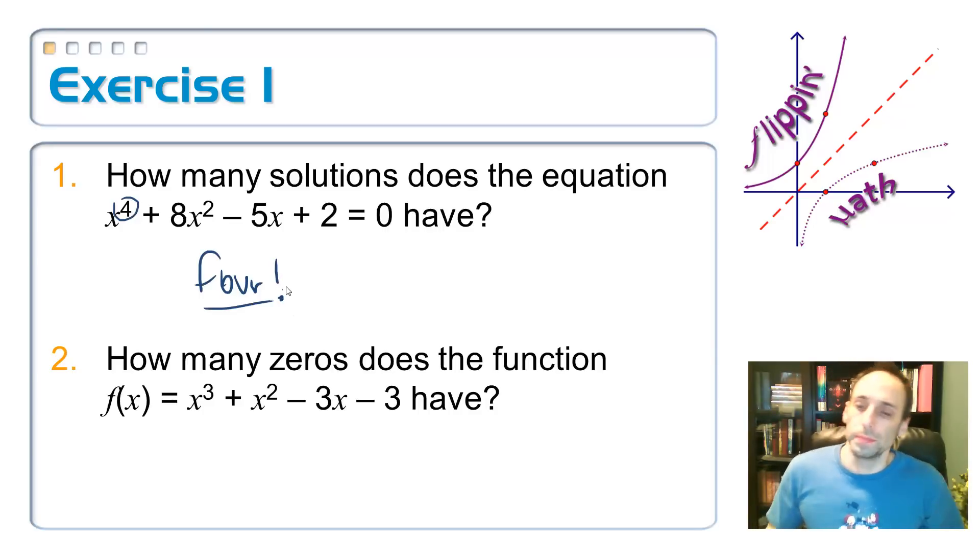How many solutions to the equation? And I can see that I have a quartic equation. It has a degree of four. So from experience we know, or we should know, that there should be four solutions here. How many zeros does this function have? So f of x equals x cubed, blah, blah, blah. This one's a cubic. How many solutions should I expect here? There's three. Three of them. So far is all good.